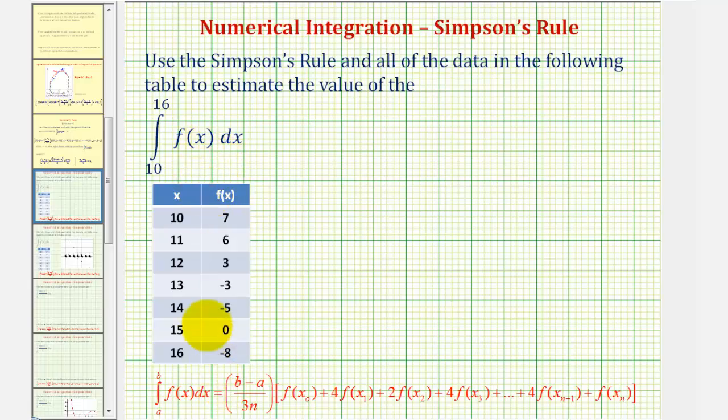So the first thing we should notice here is that we don't actually have the function, but we do have enough function values to make our estimate using Simpson's rule given by this formula here.